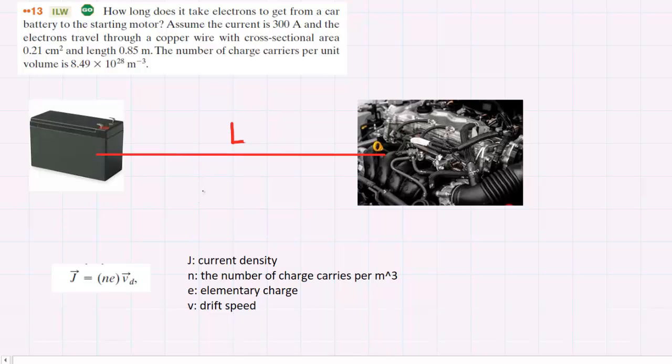In this question we're trying to figure out how long it takes electrons to get from a car battery to its motor. We know that the length between the car battery and the motor is a given quantity, 0.85 meters.